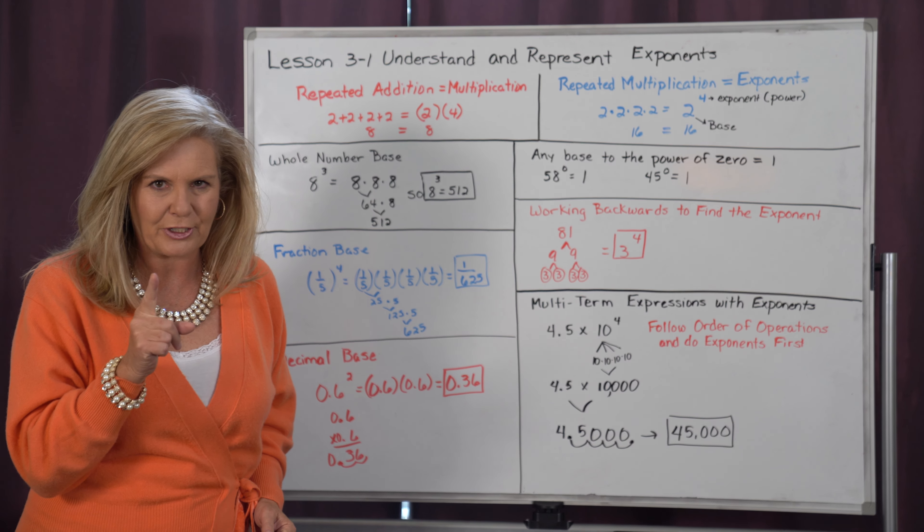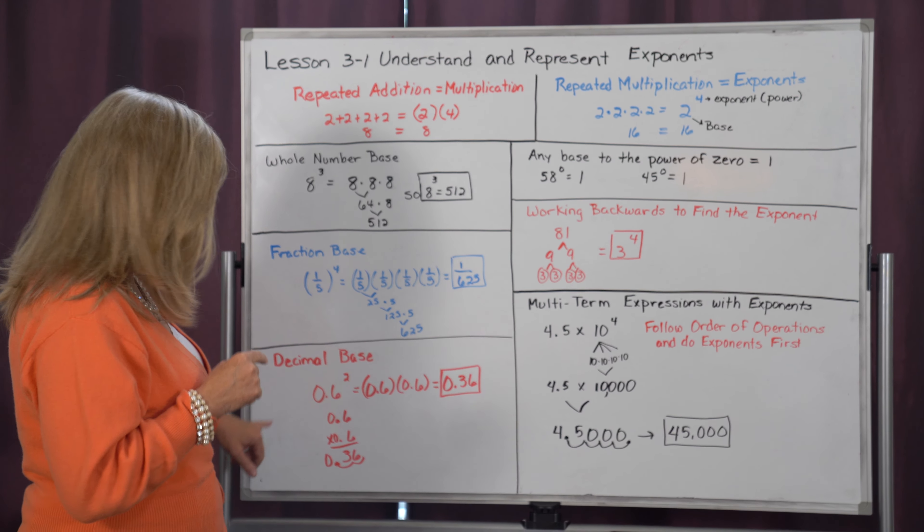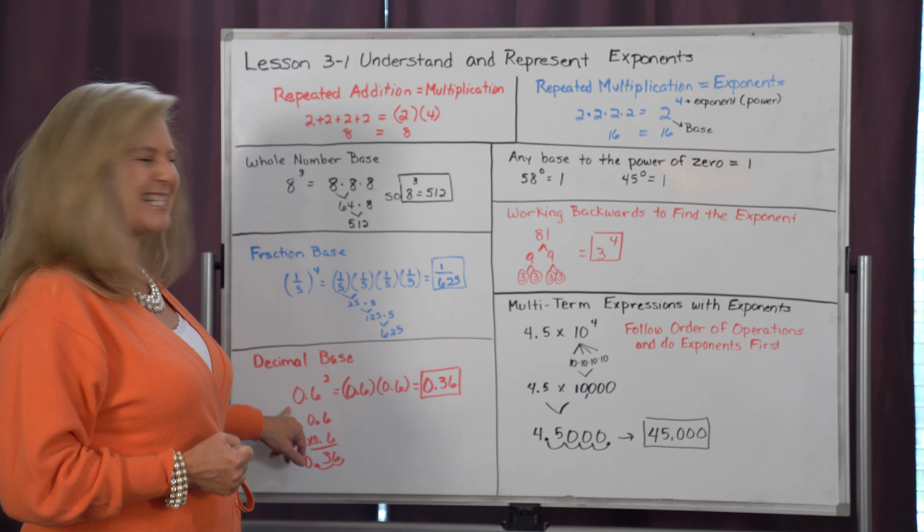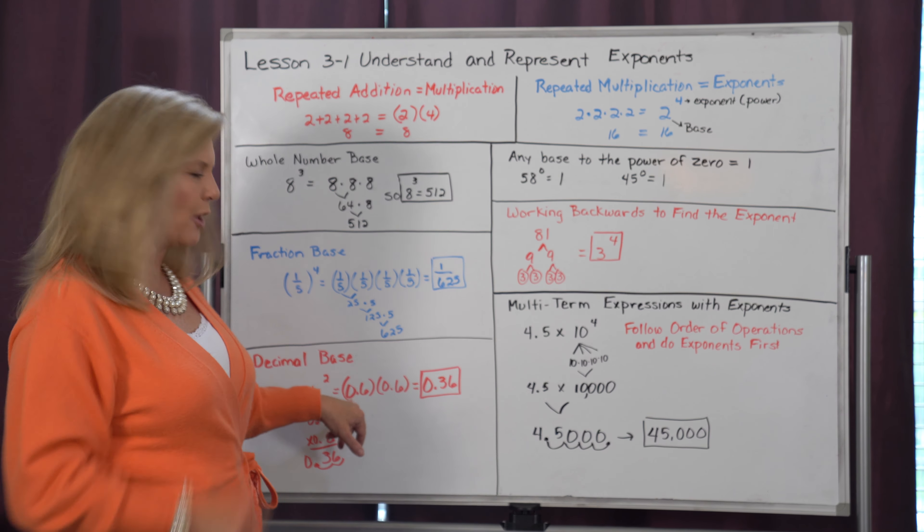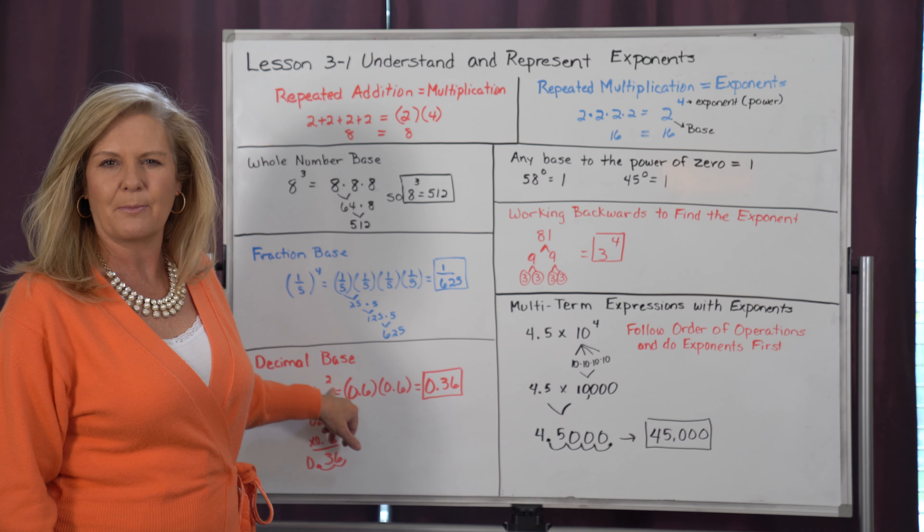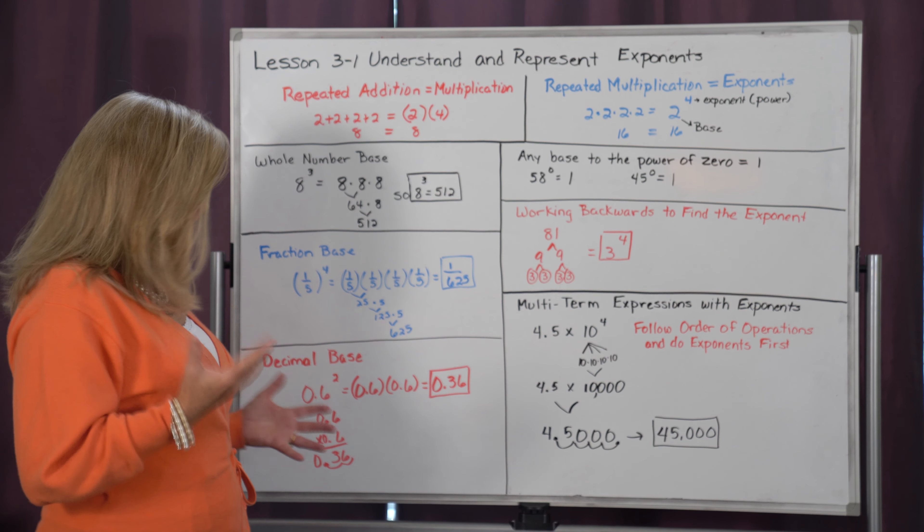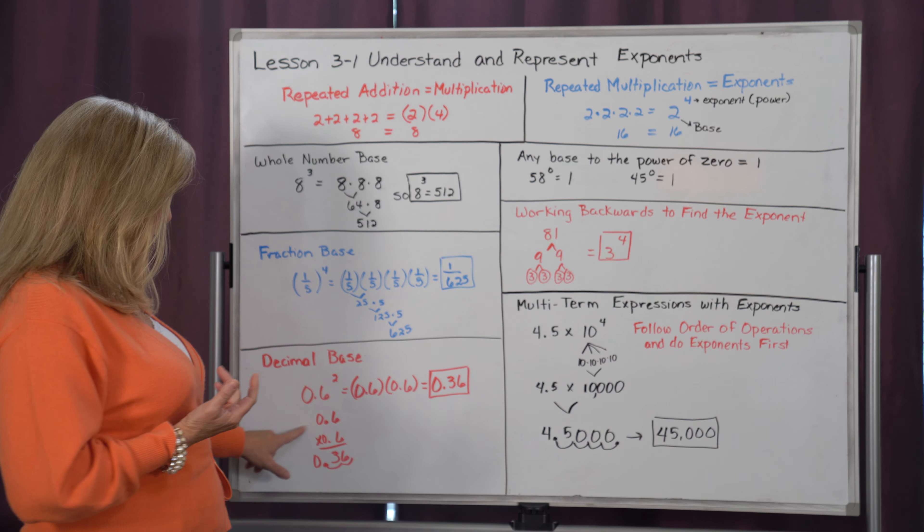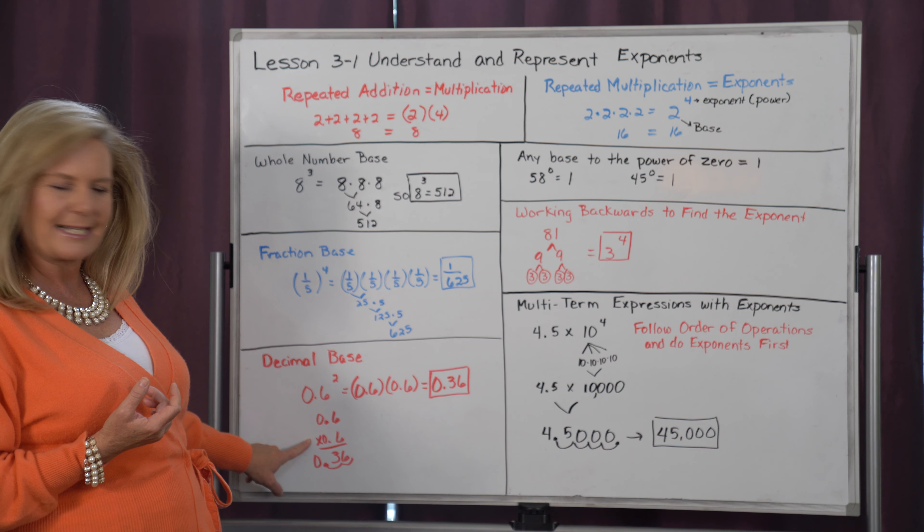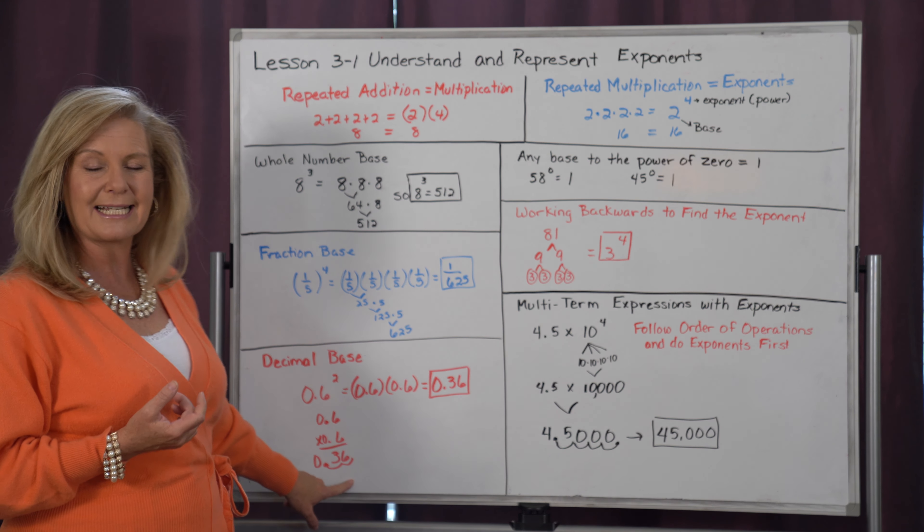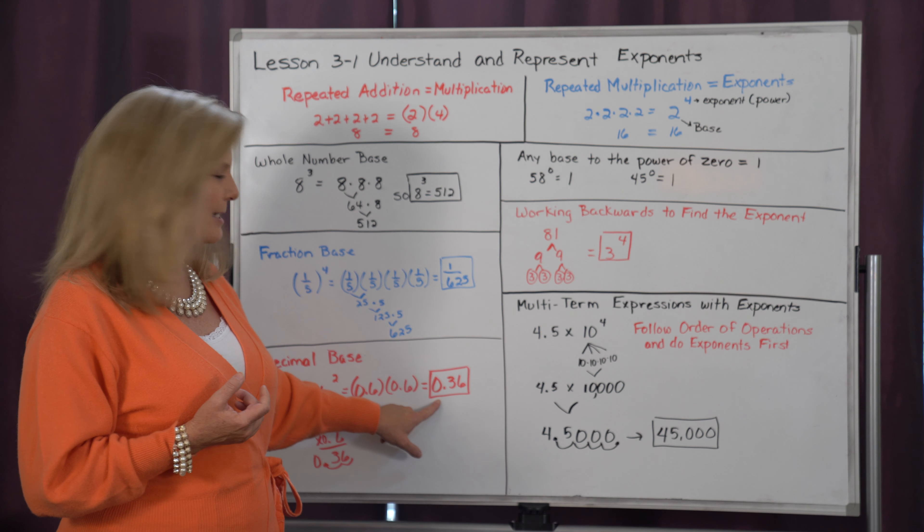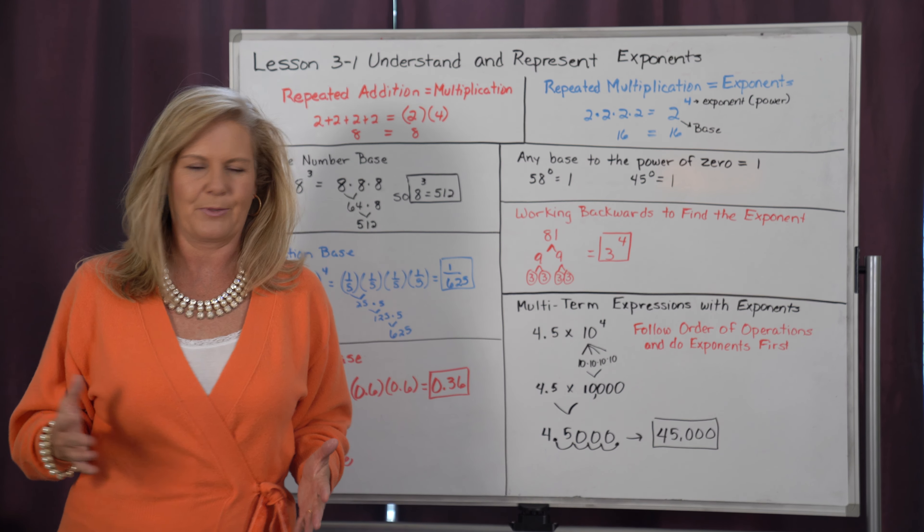But we don't have to just do whole numbers and fractions. We can do decimals as well. Any number is going to work for this. So if I have 0.6 squared, and often times if it's to the 2nd power, we say it's squared. It simply means 0.6 times 0.6. And if I go to multiply that, 0.6 times 0.6 is 0.36. So 0.6 squared is 0.36. We can do it with any type of number.